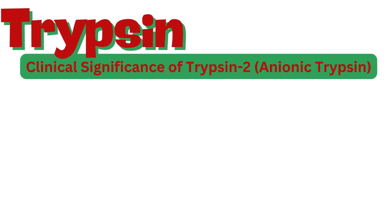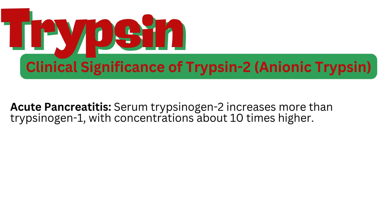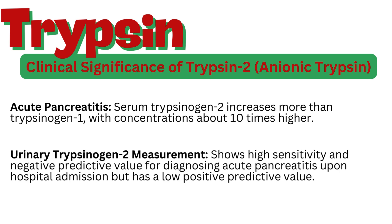Trypsin-2 (anionic trypsin) also has important clinical implications. In acute pancreatitis, serum trypsinogen-2 increases more than trypsinogen-1, with concentrations about 10 times higher. Urinary trypsinogen-2 measurement shows high sensitivity and negative predictive value for diagnosing acute pancreatitis upon hospital admission, but has a low positive predictive value.